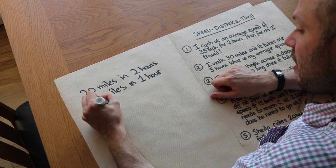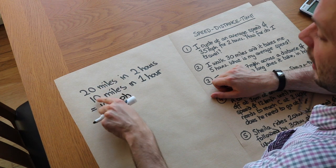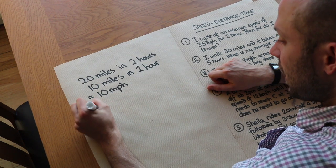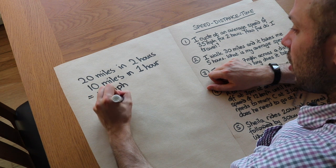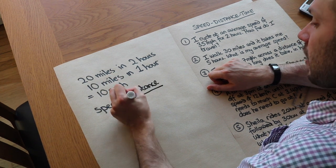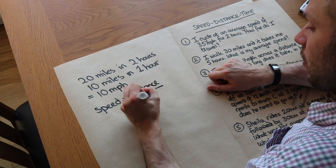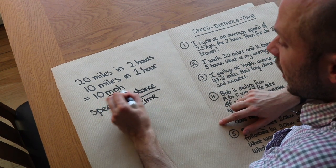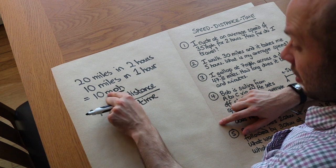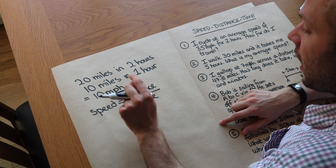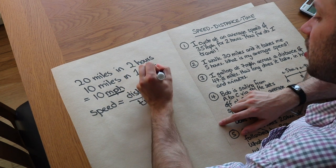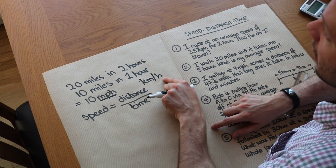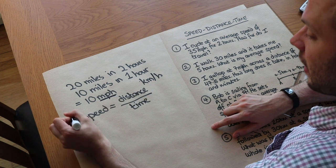And the way we write that is 10 miles per hour, because we're going 10 miles each hour. And what we've effectively just done is use a speed distance time formula. So we got the speed was the distance of 20 divided by the time of two hours. So speed is equal to distance over time. And actually, if you look at the unit it tells you the formula, because it's miles per hour—distance miles divided by time hours. It's particularly clear if I write the unit kilometres per hour, because that slash is almost like a fraction, so it's distance over time.